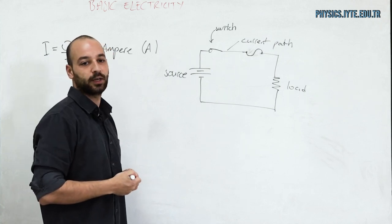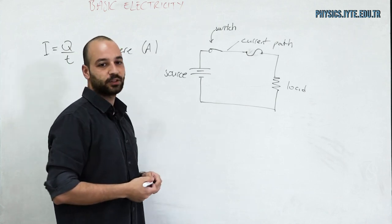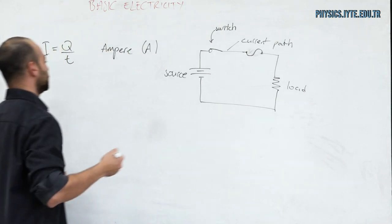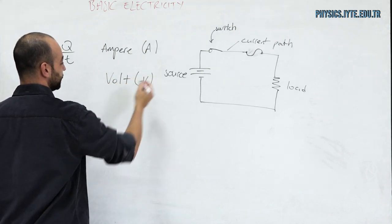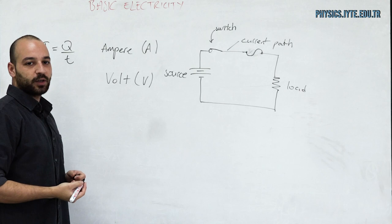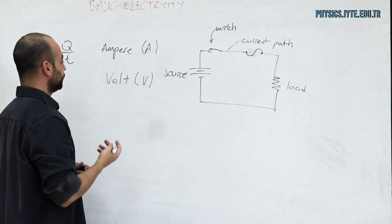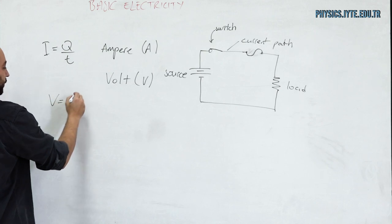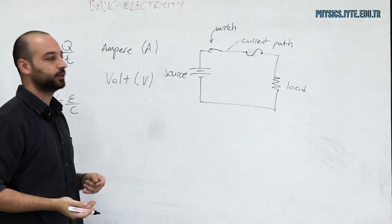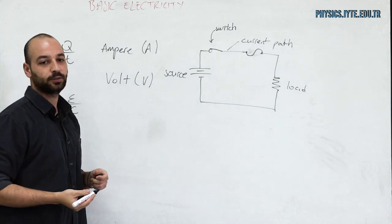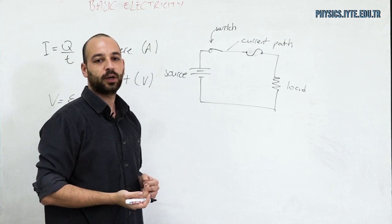To create flowing charge in our circuits we need a voltage supply. Voltage is also known as electromotive force or potential difference, and the unit is volt. One volt is the amount of potential difference between two points needed to move one coulomb of charge using one joule of energy from one point to another.